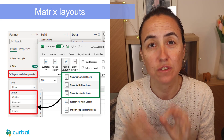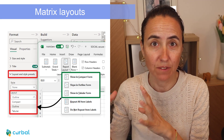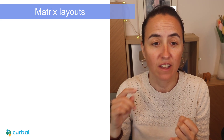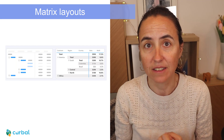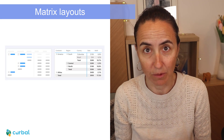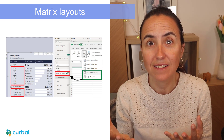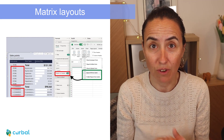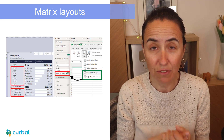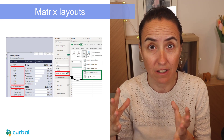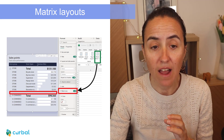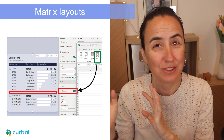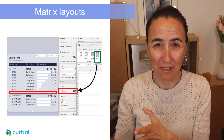The matrix has got new layouts to match the layers we've known from Excel, so it has the compact, the outline, and the tabular one. The same as in Excel, we now have the option to repeat row headers if we want to make it look like a table, and to add blank rows.